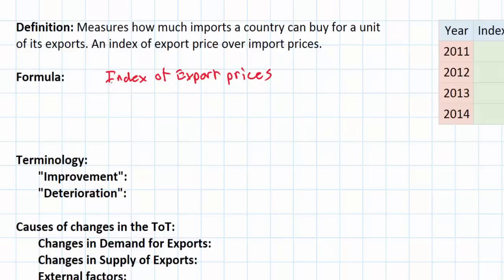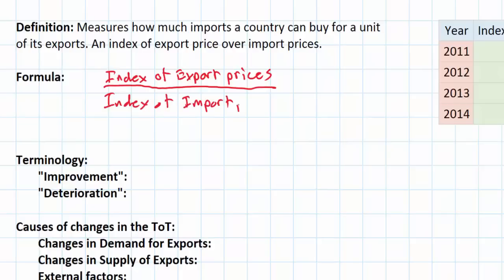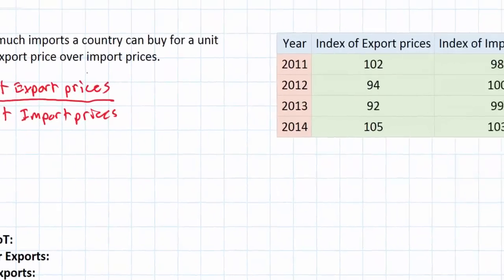Using a base year we can determine whether a country's export prices have increased or decreased over time. Once we know the index of export prices, we can divide that price index by an index of import prices, which measures the prices of the goods that a country imports in a particular year and determines whether the prices of those imports have risen or fallen.